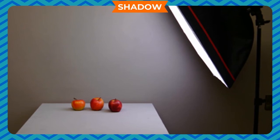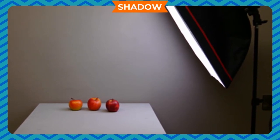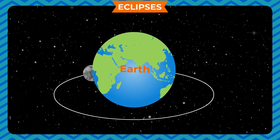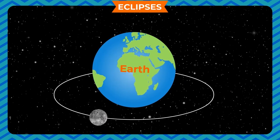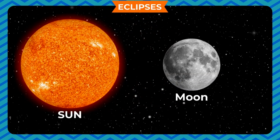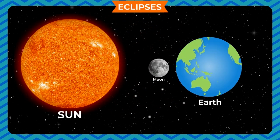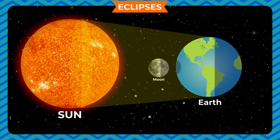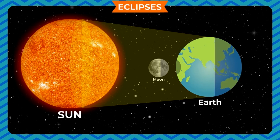Eclipses. As you know, the earth revolves around the sun and the moon revolves around the earth in a fixed orbit. During their motion, simultaneously, the sun, the moon and the earth come along a straight line. Because of this, the light of the sun is obstructed either by the moon or the earth, and the sun and the moon respectively seem to disappear when seen from the earth. This phenomenon is called an eclipse.